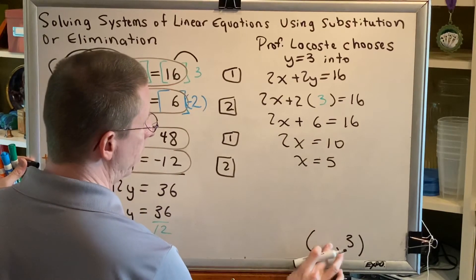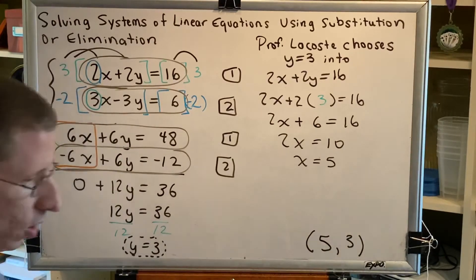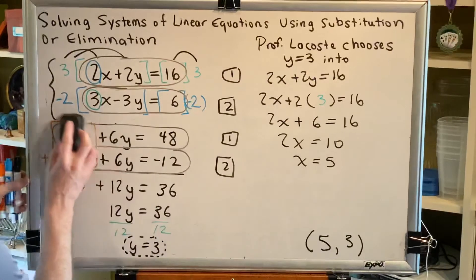So we now have our completed solution. It's the ordered pair 5 comma 3. But we have to check it and make sure it's a correct answer.